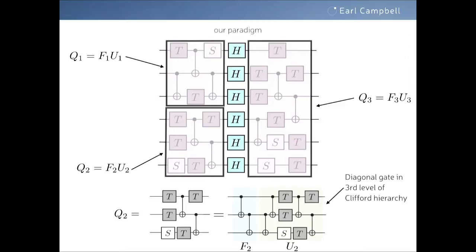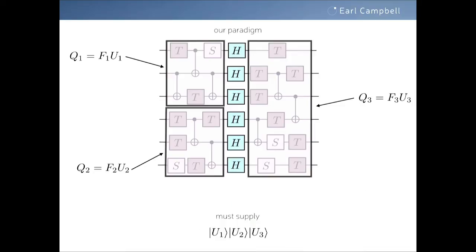The second part U always belongs to the diagonal gates in the third level of the Clifford hierarchy — those are the unitaries we know how to deterministically inject, provided we have the right magic state. This immediately tells us that for any algorithm, we can always break it up so that to implement the circuit, all we need to do is prepare magic states U1, U2, U3, and so on.